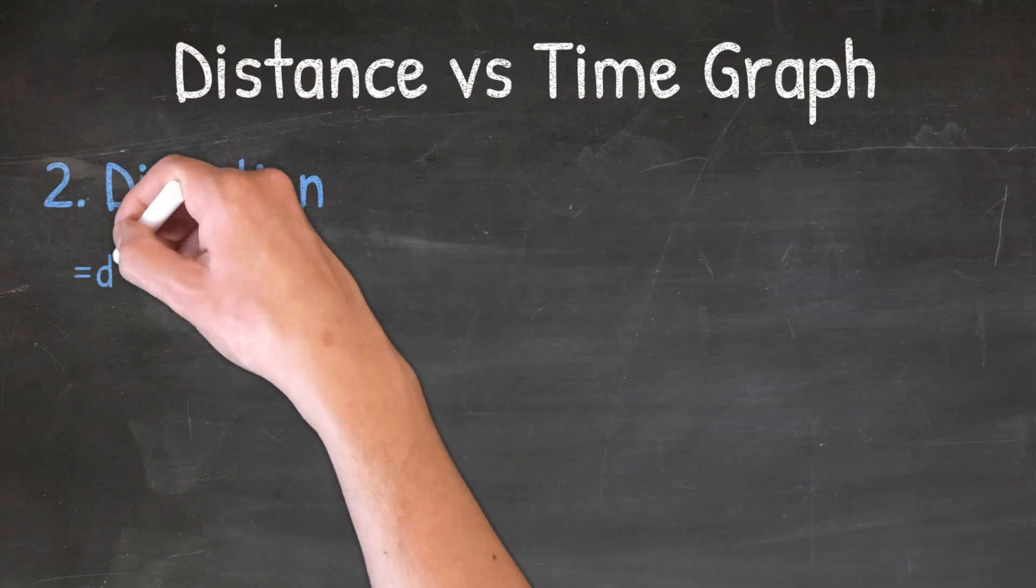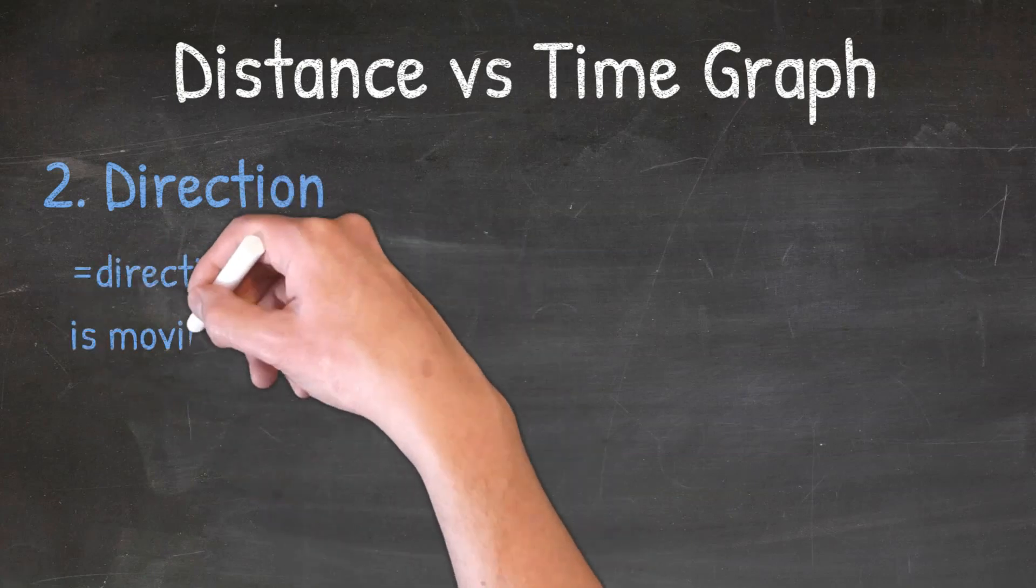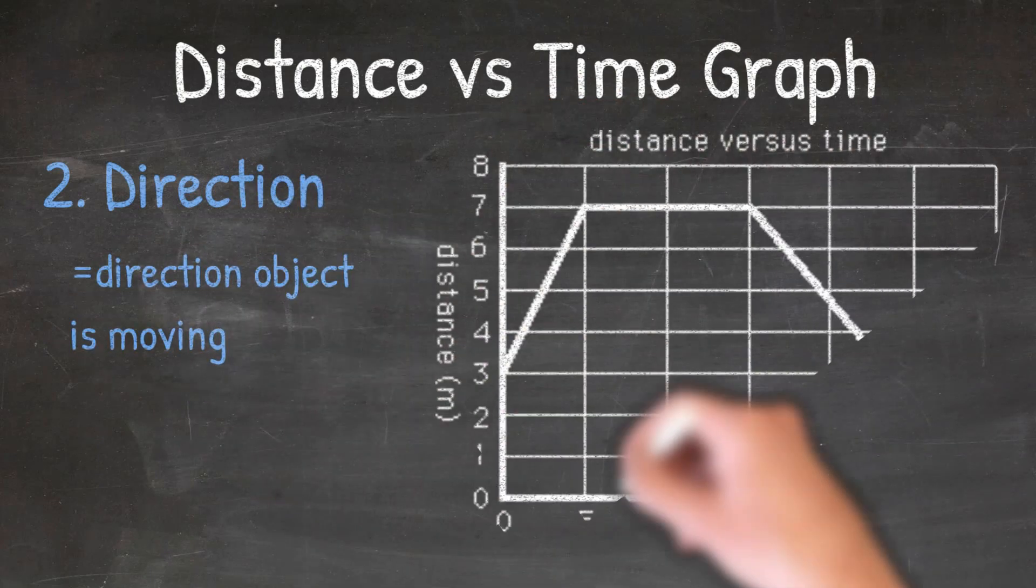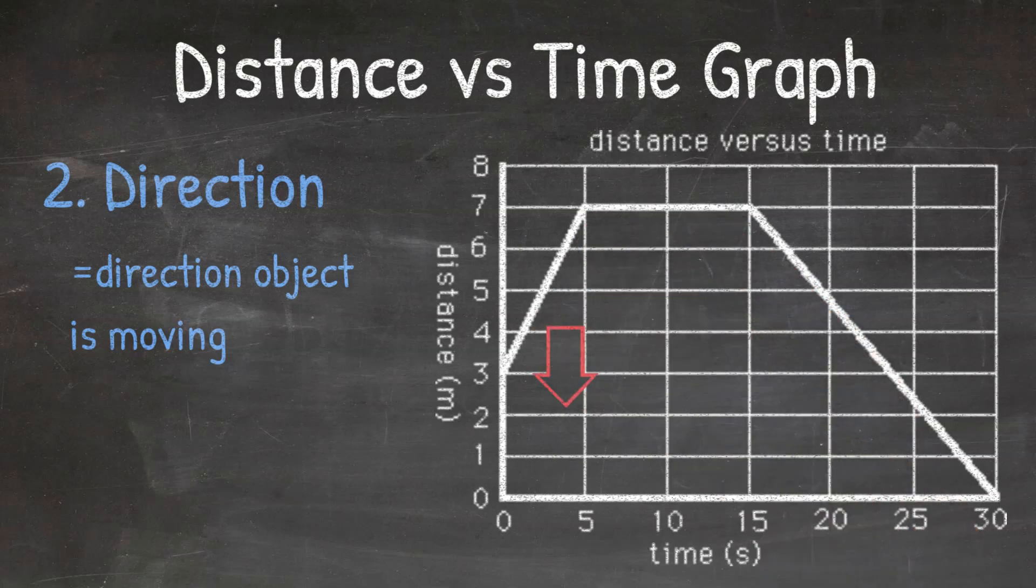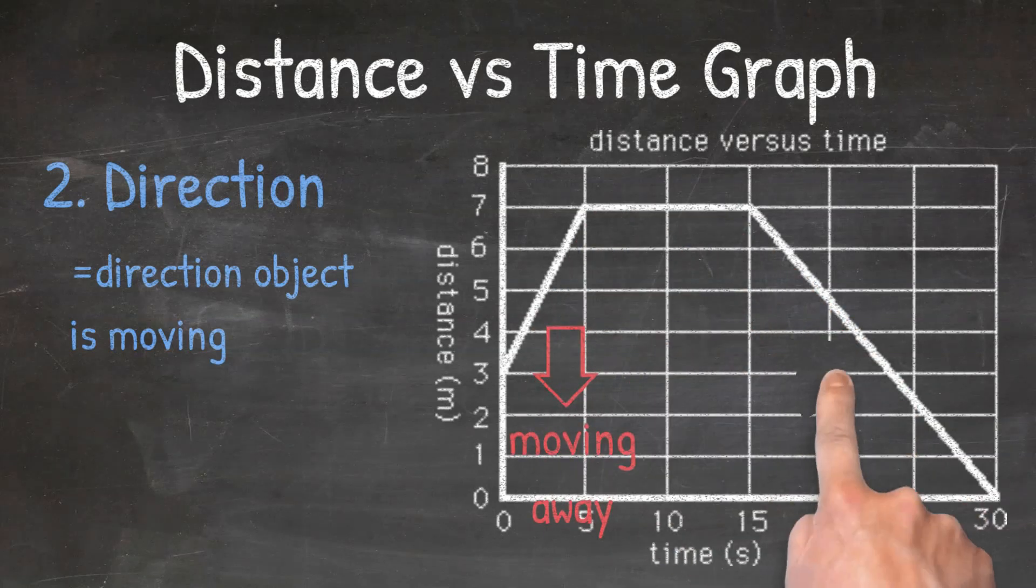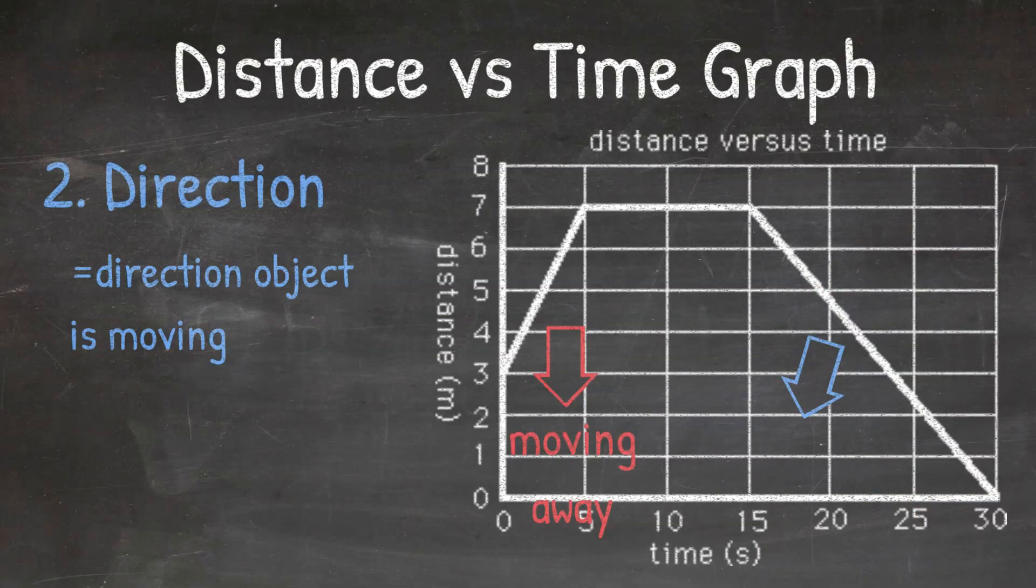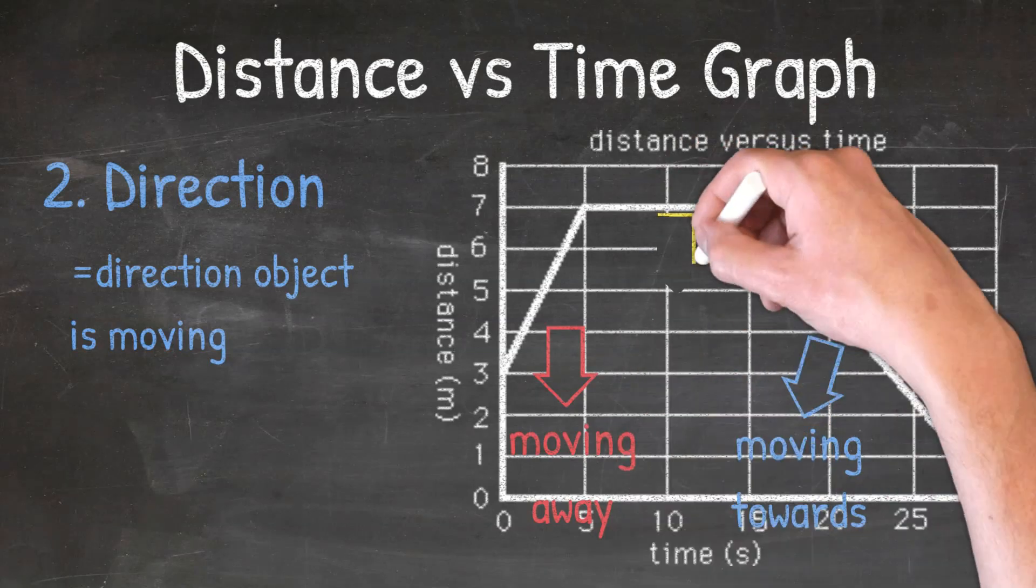Looking at the direction of the line, we can learn more about the direction the object is traveling. If the line has a positive slope, meaning it is pointed up, that means the object is moving away. If the line has a negative slope, meaning it is pointed down, that means the object is moving back towards the start. And if the line is flat, that means the object is not moving.